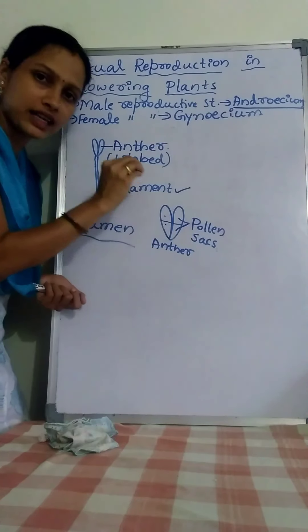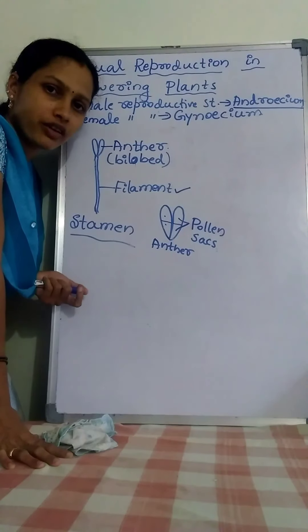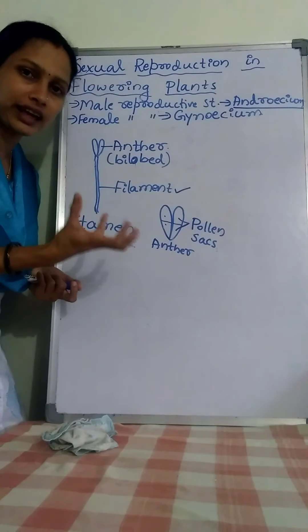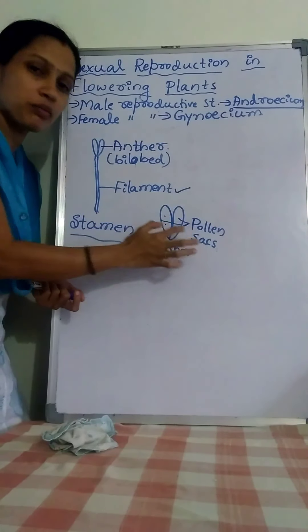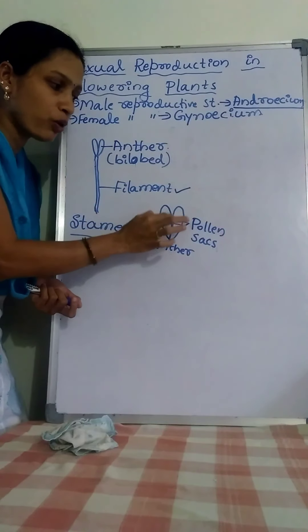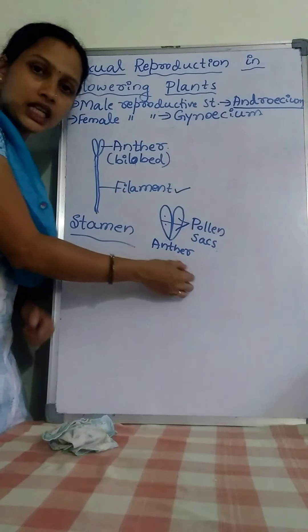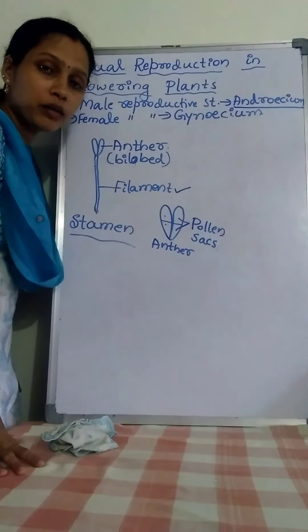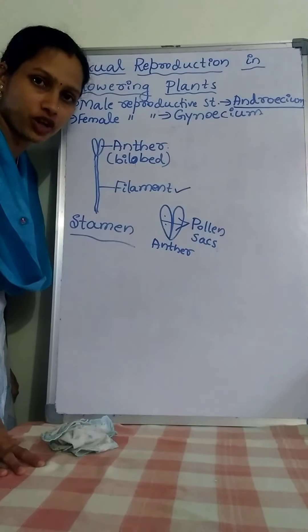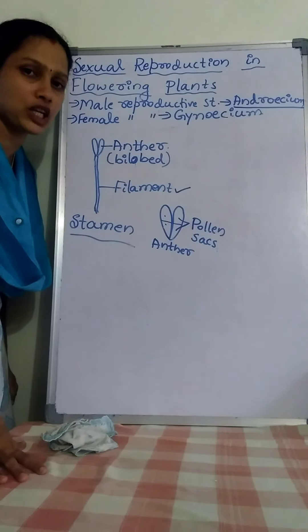Inside the pollen sacs, the development of pollen grains takes place. These pollen grains are yellowish, powdery-like substances. The development of the male gamete takes place inside the anther by meiosis — that is, by meiotic type of cell division.